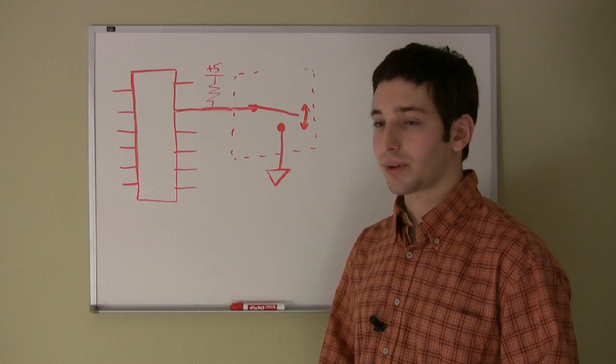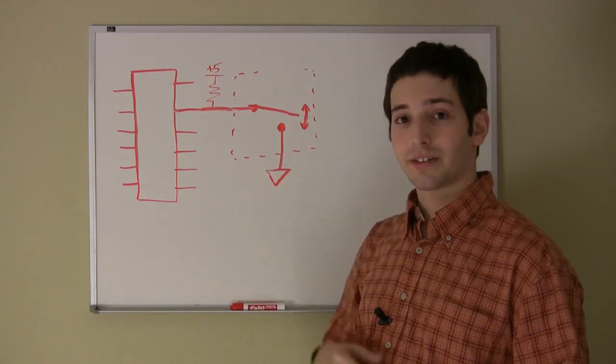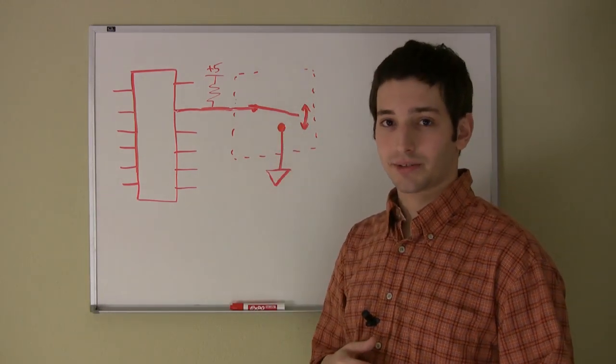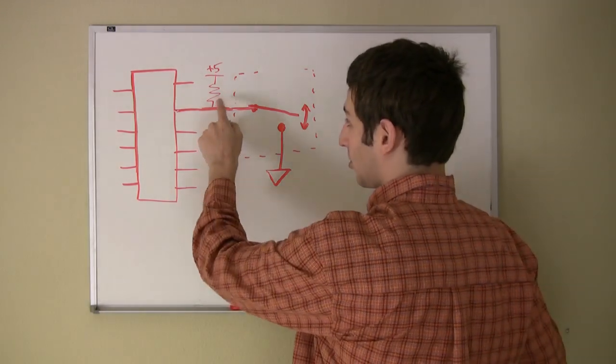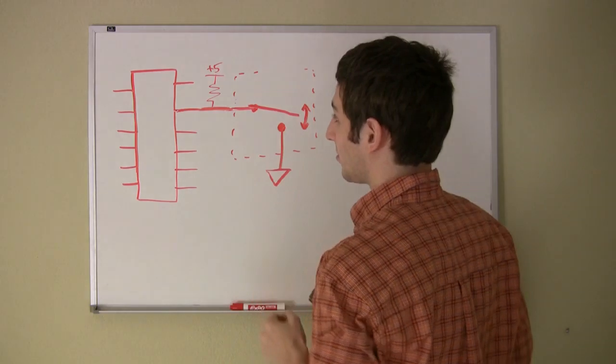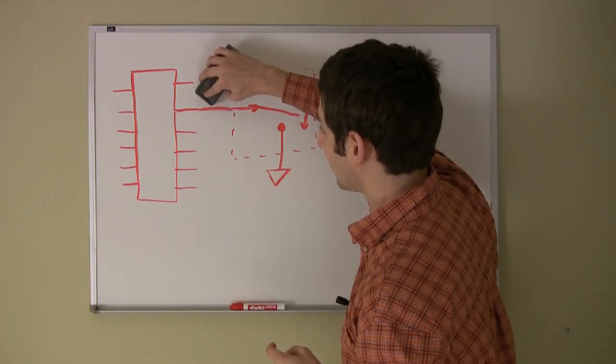There are a few advantages to doing it this way. One is that we don't need a switch with the third terminal. This lets us use a broader selection of switches. Another advantage is that with our microcontroller, this pull-up resistor can actually be built into the chip, and you can turn it on with one line of code, so we don't need any external components.